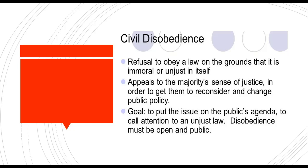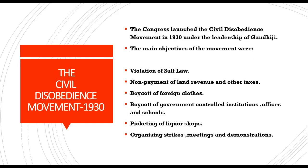A civil disobedience movement was started by Mahatma Gandhi in 1930. The Congress launched this movement under the leadership of Gandhiji. The main objectives were: violation of the salt law, non-payment of land revenue and other taxes, boycott of foreign clothes, boycott of government-controlled institutions, offices and schools, picketing of liquor shops, and organizing strikes, meetings, and demonstrations.